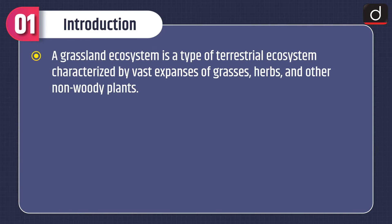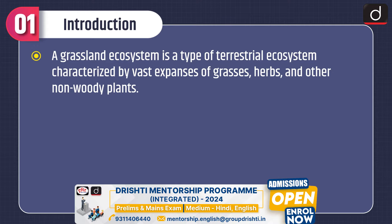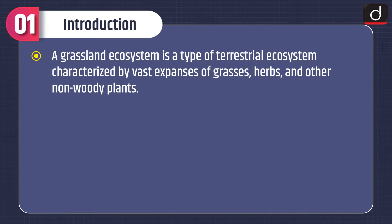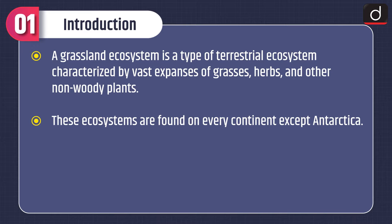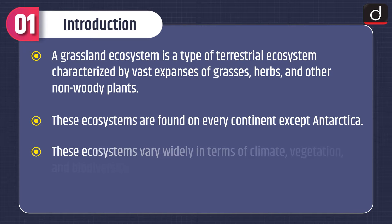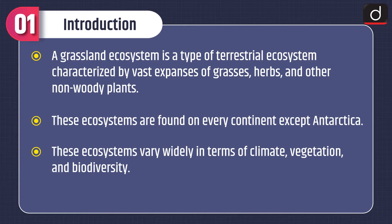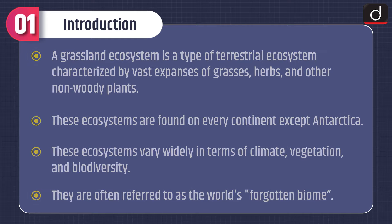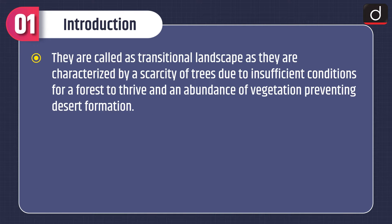Moving on to the introduction of the topic. A grassland ecosystem is a type of terrestrial ecosystem characterized by vast expanses of grasses, herbs and other non-woody plants. These ecosystems are found on every continent except Antarctica and vary widely in terms of climate, vegetation and biodiversity. They are often referred to as the world's forgotten biome, and called a transitional landscape — characterized by a scarcity of trees due to insufficient conditions for a forest to thrive, and an abundance of vegetation preventing desert formation.